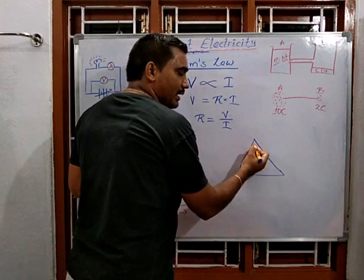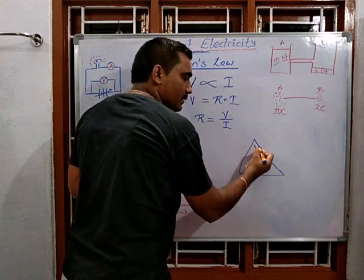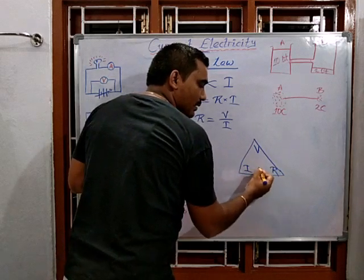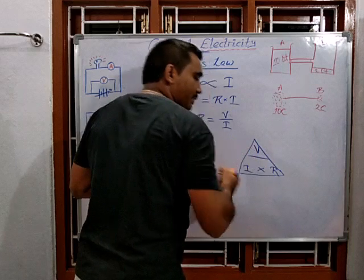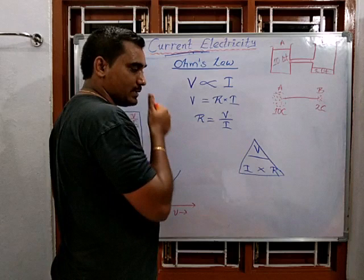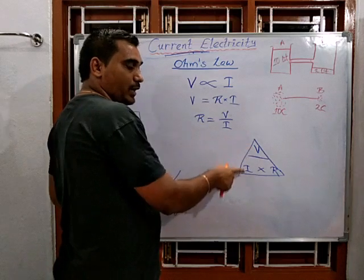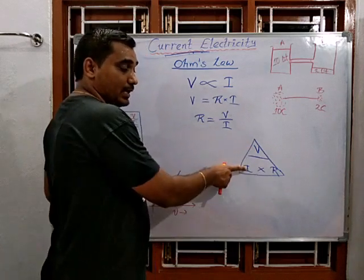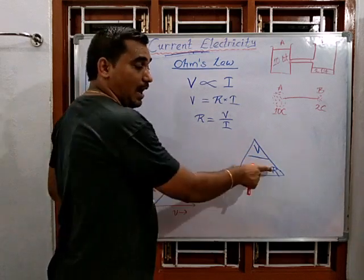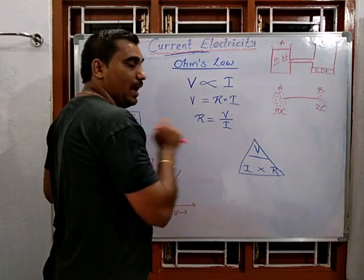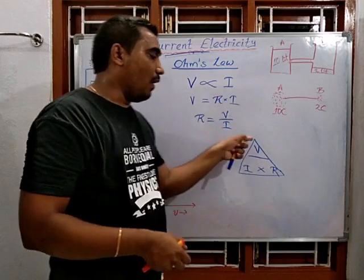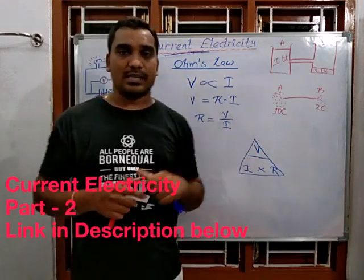I draw a triangle as a memory technique: V at the top, I and R at the bottom with a multiplication/division sign. From this triangle I can say V is equal to I into R, I is equal to V by R, and R is equal to V by I — making it easy to memorize all three formulae related to Ohm's Law.